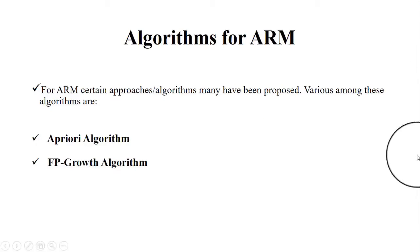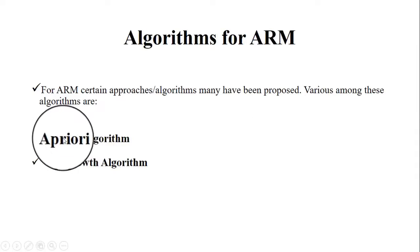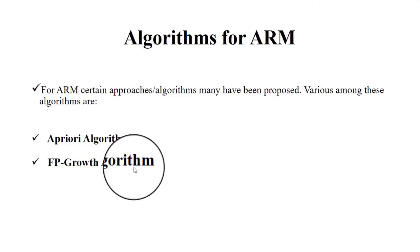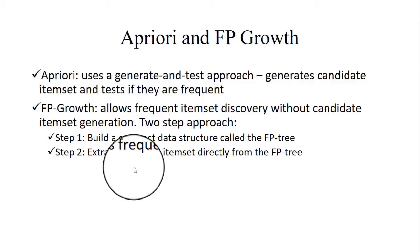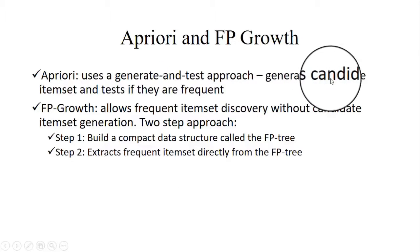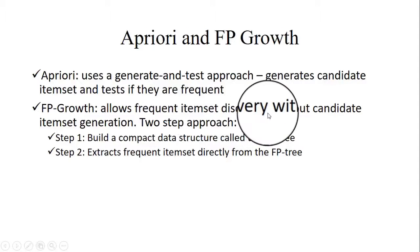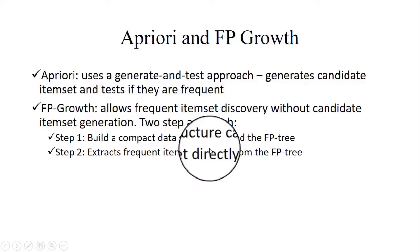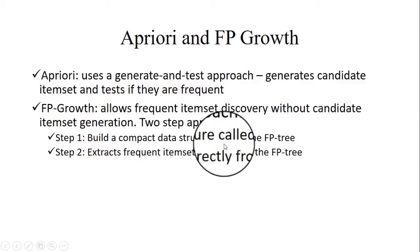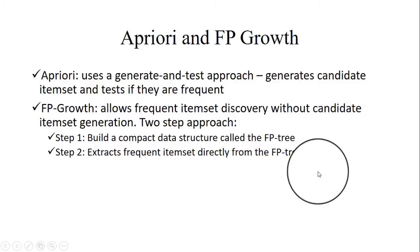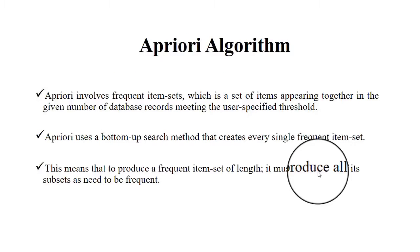There are two algorithms mostly used in association rule mining: the Apriori algorithm and FP Growth, that is, the Frequent Pattern Growth algorithm. Apriori uses a generate-and-test approach — it generates candidate item sets then tests if they are frequent. FP Growth allows frequent item set discovery without generation of candidate sets, using only a two-step approach.